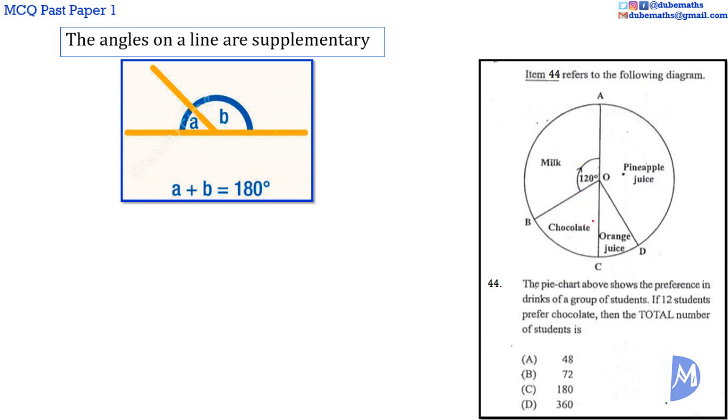Therefore, the share of milk added to the share of chocolate is equal to 180 degrees. Therefore, the share of chocolate is equal to 180 degrees minus 120, which is equal to 60 degrees. We are given that 12 students prefer chocolate.